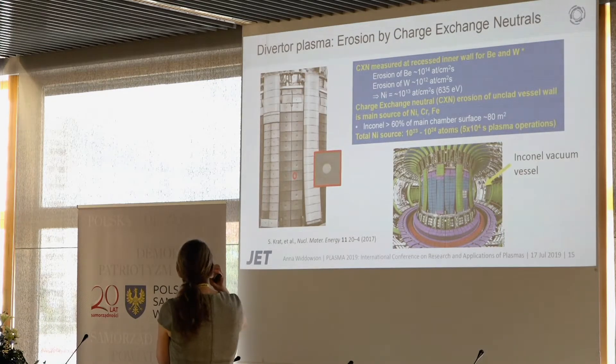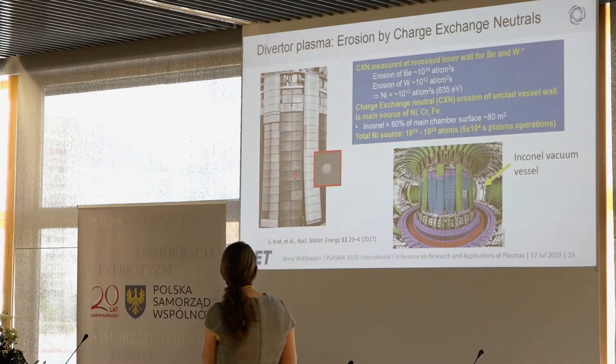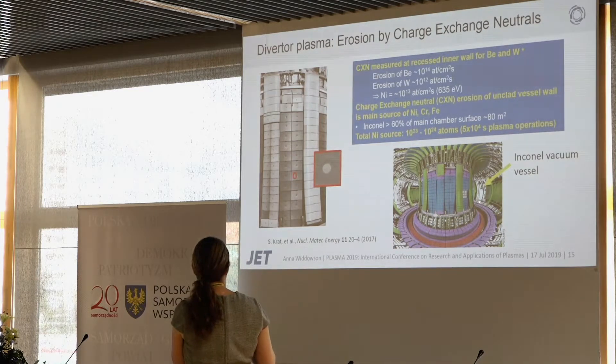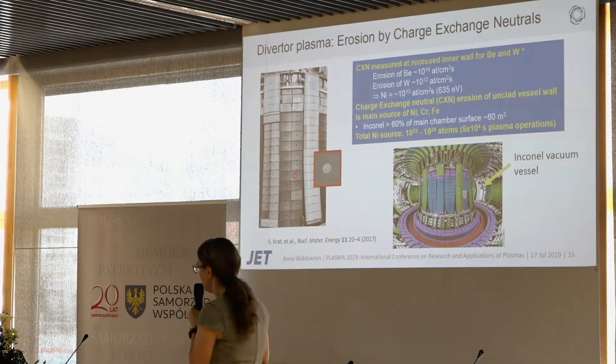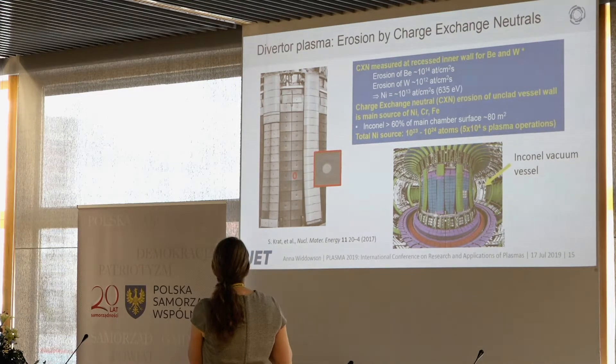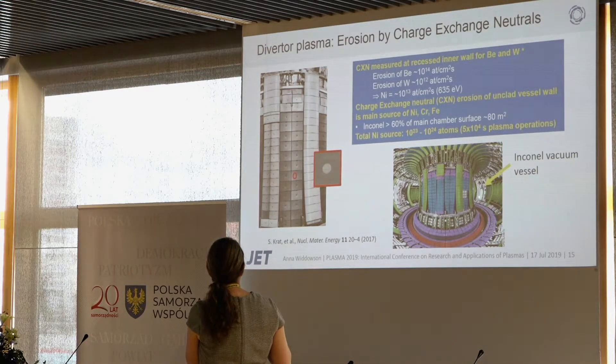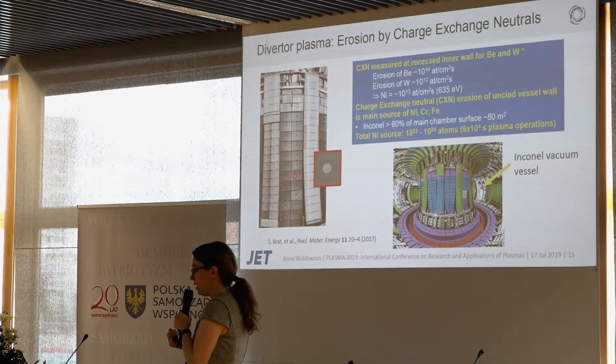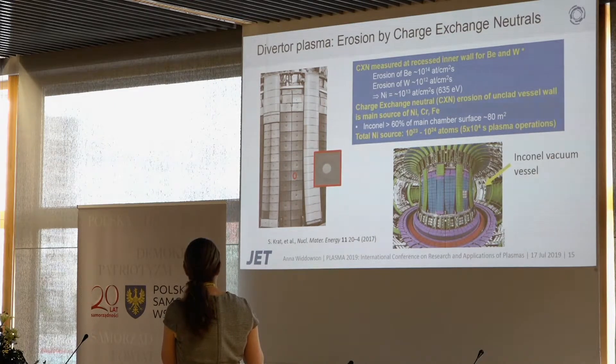Moving to charge exchange neutral erosion: in the divertor configuration, charge exchange neutrals can reach right out to the inner wall and to the outer wall. We had an experiment with small tokens placed at the inner wall carrying beryllium and tungsten, and made a direct measurement of erosion due to charge exchange neutrals. We found a beryllium source from the main chamber, but also a significant source from the Inconel, since Inconel makes up 60% of the main chamber surface.